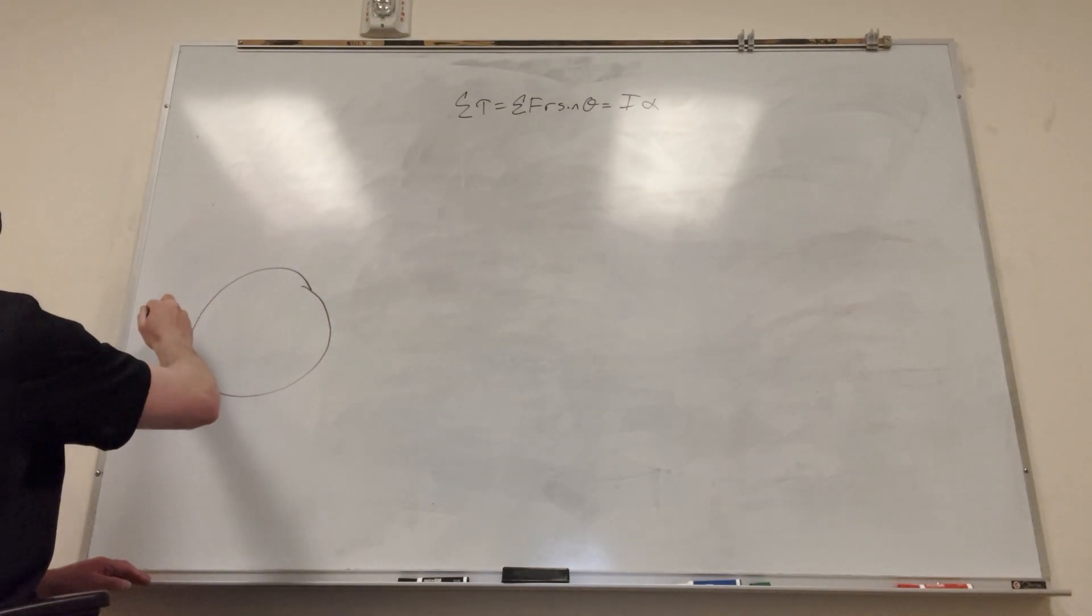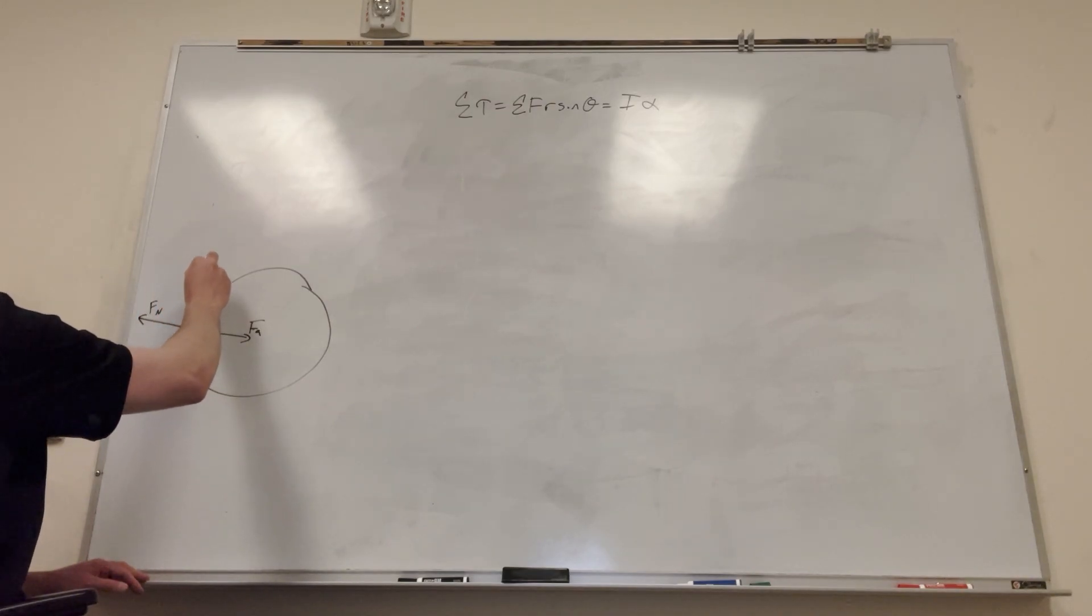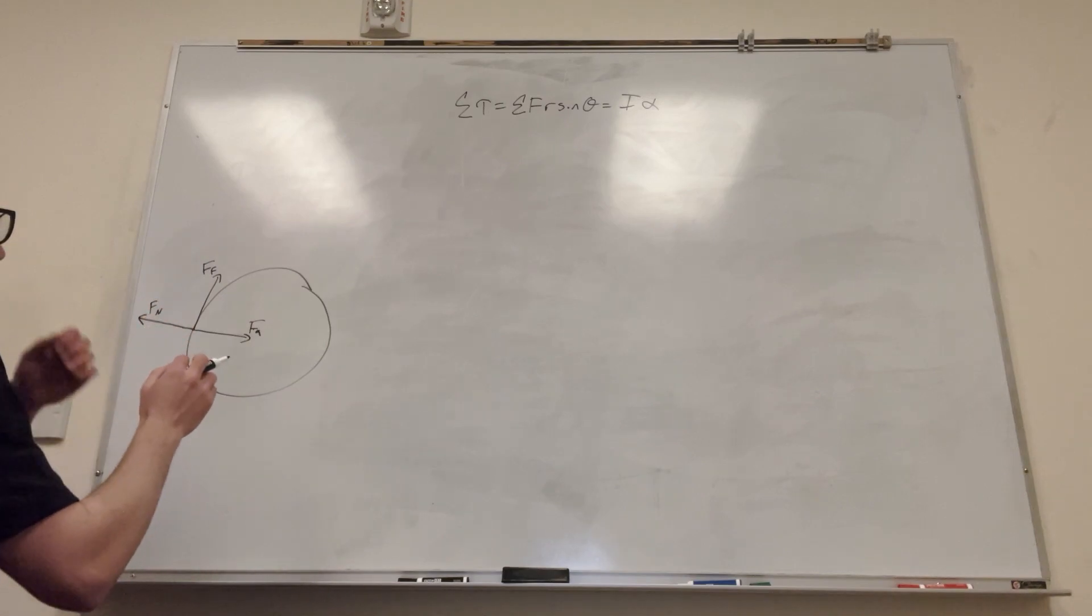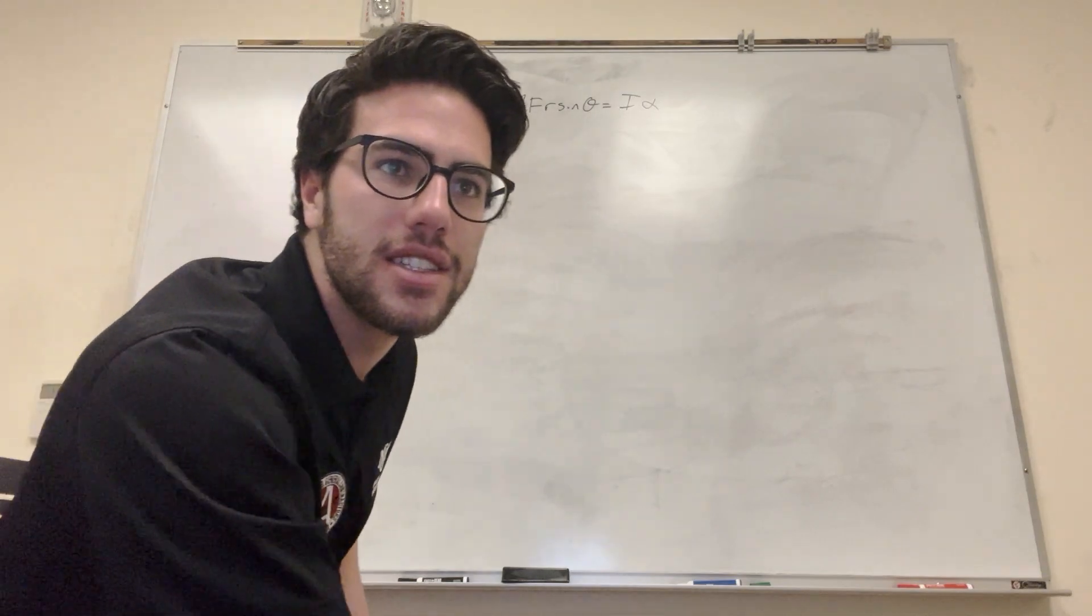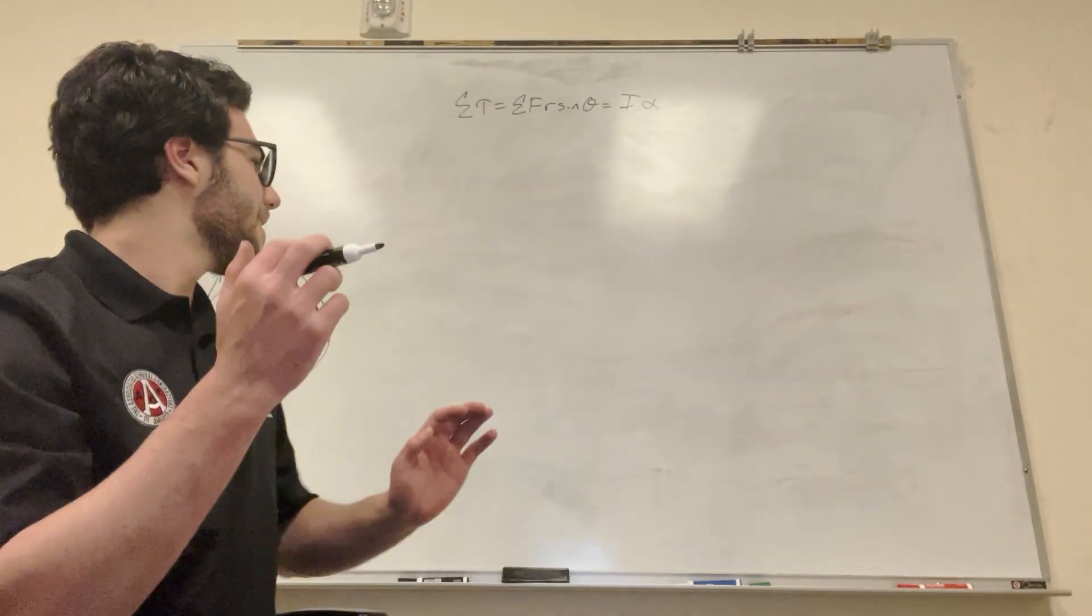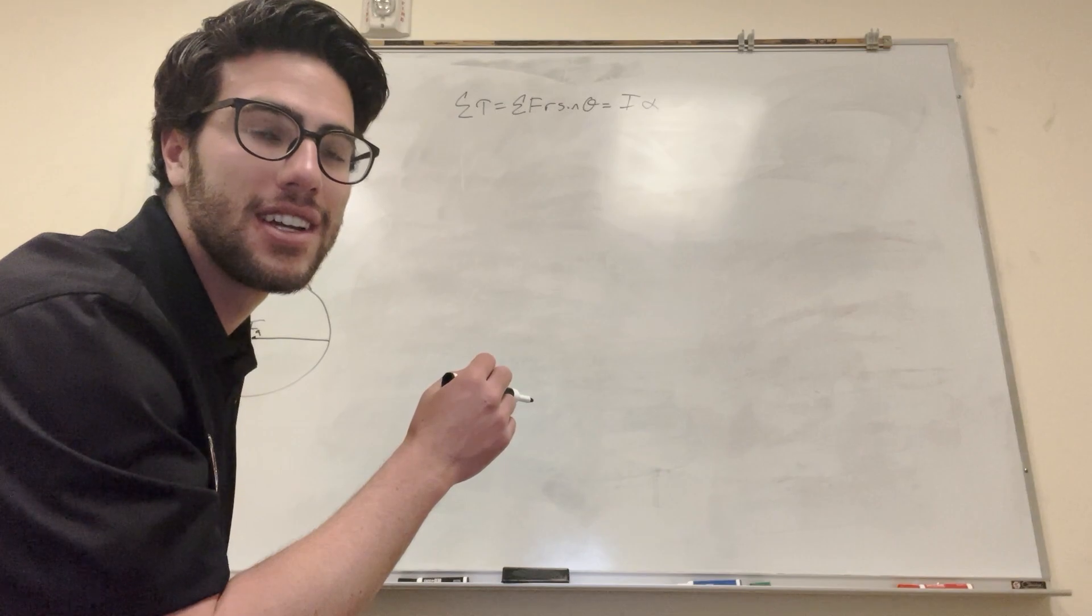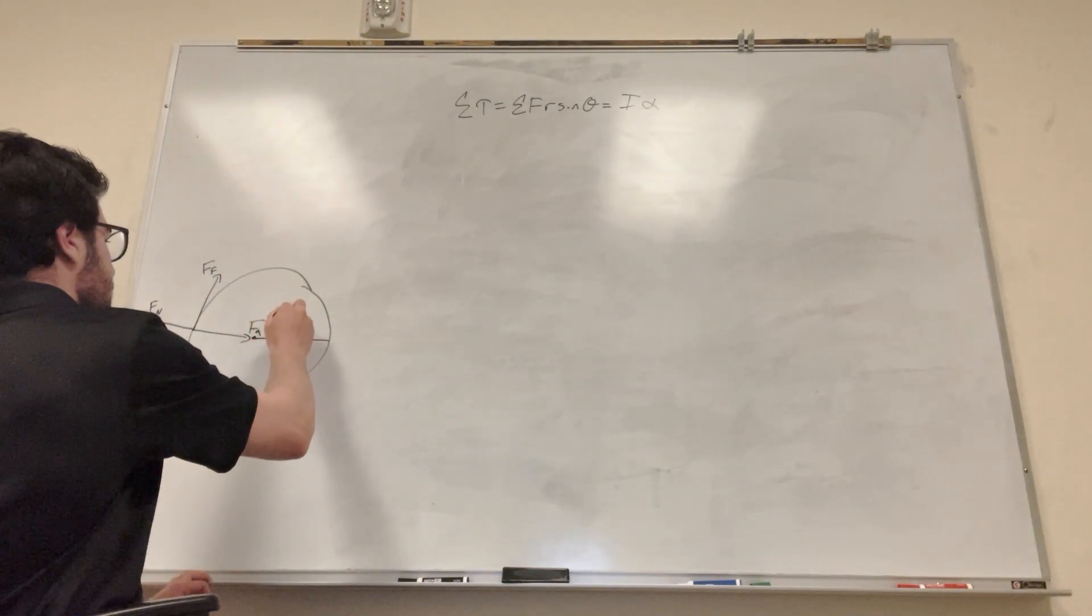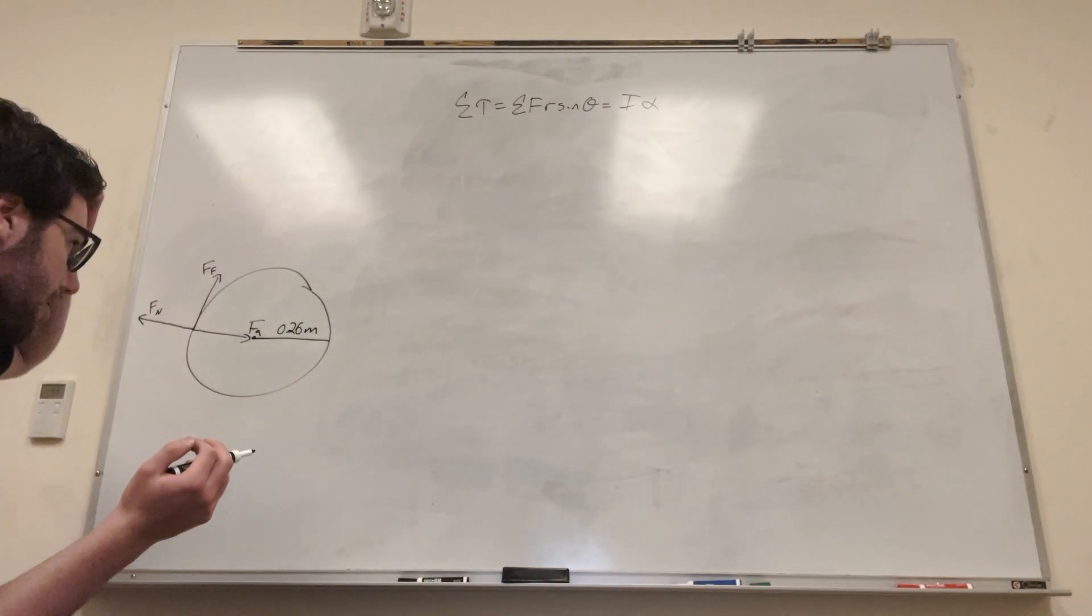So here's our grindstone and we're applying this force against it right? We're putting this force applied here. So that's gonna have a force normal and then it's gonna have this force of friction which is what we're gonna need. So here's the radius. What's the radius of this thing? It is not given. Oh okay it gives us the diameter. Okay so the diameter is 52 centimeters. It's gonna be 0.26 meters. Okay so let's do this.